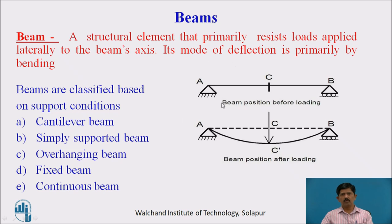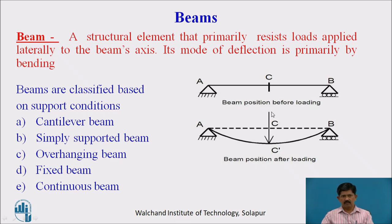Before going into slope and deflection, we will see what is a beam and its definition. A beam is a structural element that primarily resists loads applied laterally to the beam axis. Its mode of deflection is primarily by bending — the load applied is lateral and the beam takes a bending shape, resisting by bending.